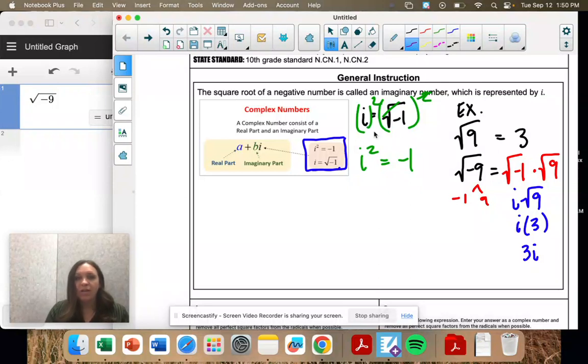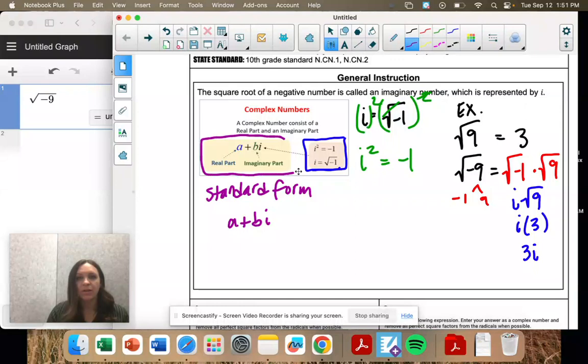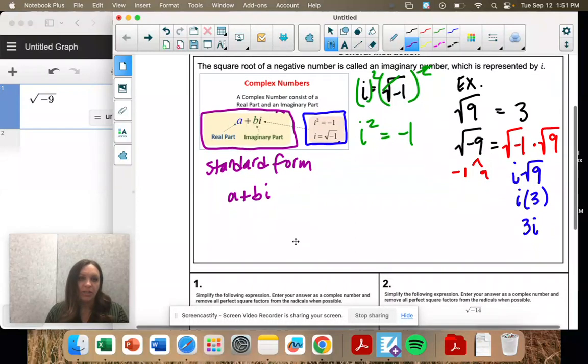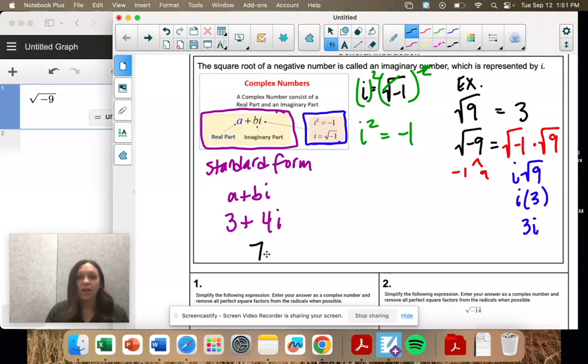When we write imaginary numbers, we have what we call standard form. So standard form is a plus bi. A is the real part, and b is the imaginary. So an example of that would be 3 plus 4i. So it does not equal 7i. One of these is a real number, one is an imaginary number. They're not like terms. You can't combine them.